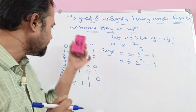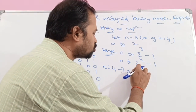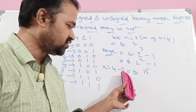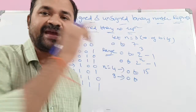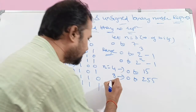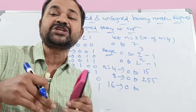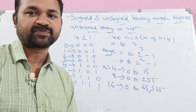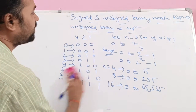The range of unsigned binary number representation is 0 to 2^n − 1, where n represents the number of bits. If n = 4, the range is 0 to 2^4 − 1 = 15. If n = 8, the range is 0 to 255. If n = 16, the range is 0 to 65,535. So the formula for the range of unsigned binary numbers is 0 to 2^n − 1.